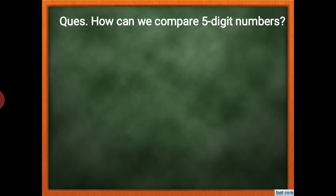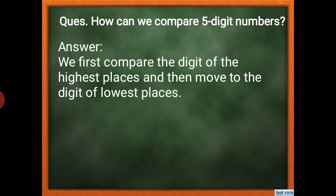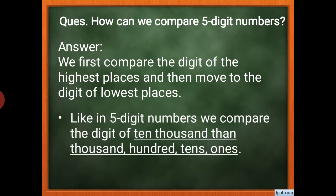Now, how can we compare five-digit numbers? We compare the digits starting from the highest place and then move to the lowest. For a five-digit number, we first compare the ten-thousands place, then the thousands, then the hundreds, then the tens, and finally the ones place — always moving from highest to lowest.